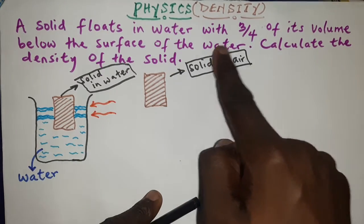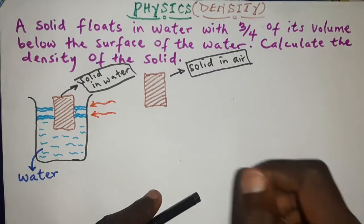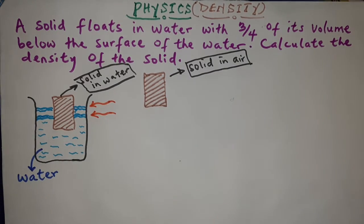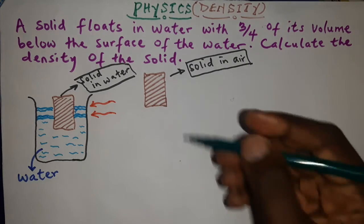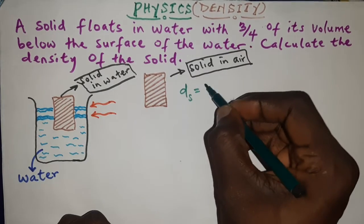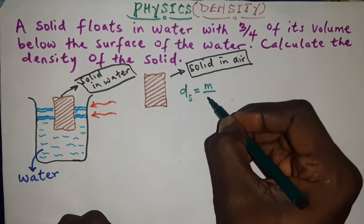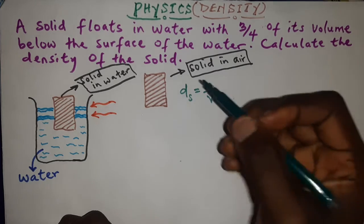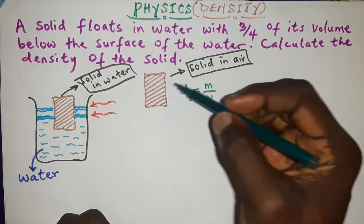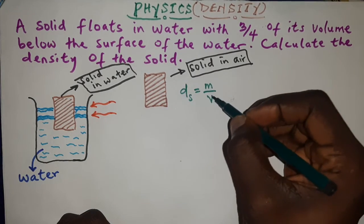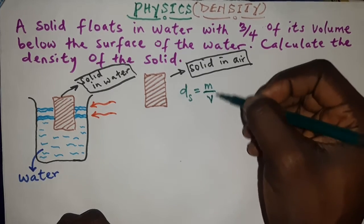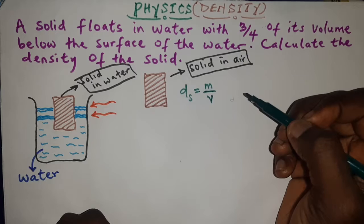We need to calculate the density of the solid. We know that the density of this solid will be equal to its mass divided by its volume. Just looking at the solid, we know that we can see the overall volume — if it's not irregular, at least we should be able to get the volume and the mass, then divide to get the density of the solid.